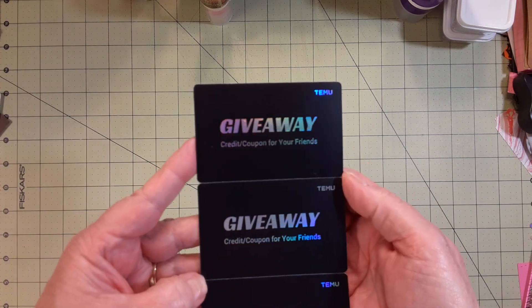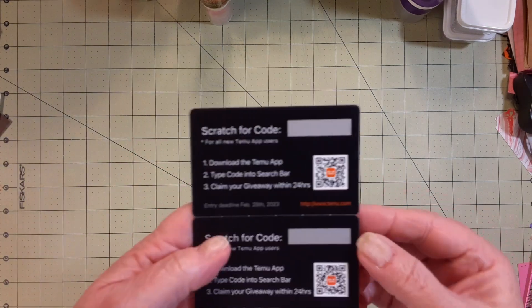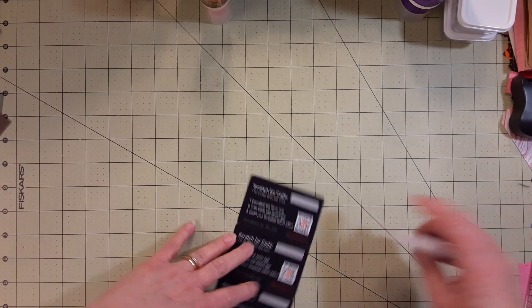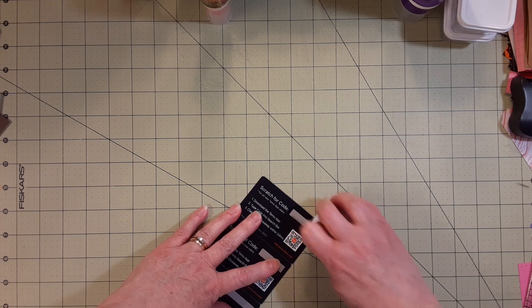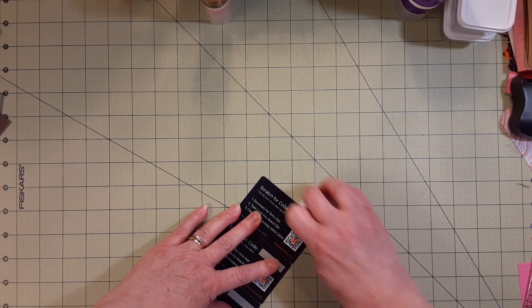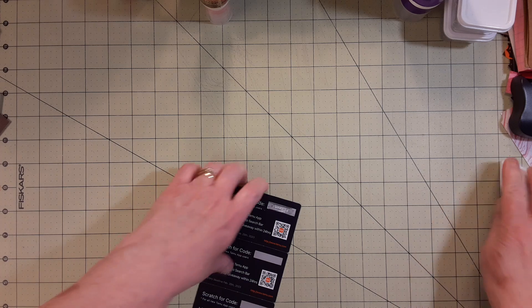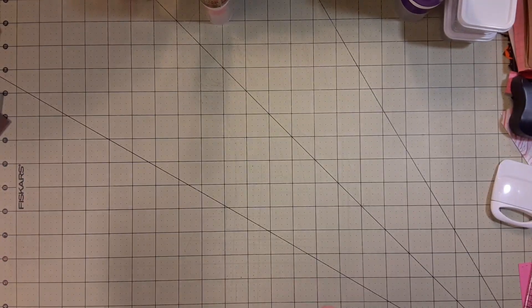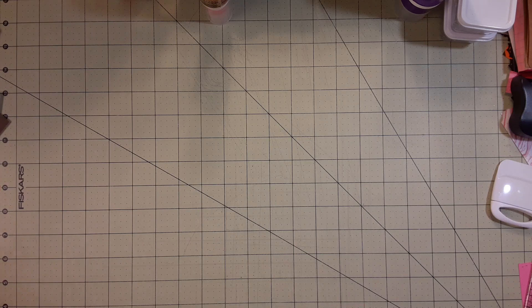What really was interesting is it was credit coupon for your friends. I don't know. Let me see. What is this? Scratch for code. I don't think any friends of mine are going to use this. Yeah, it's like a little code they would enter in. I might give one to my sister. She was thinking about it.